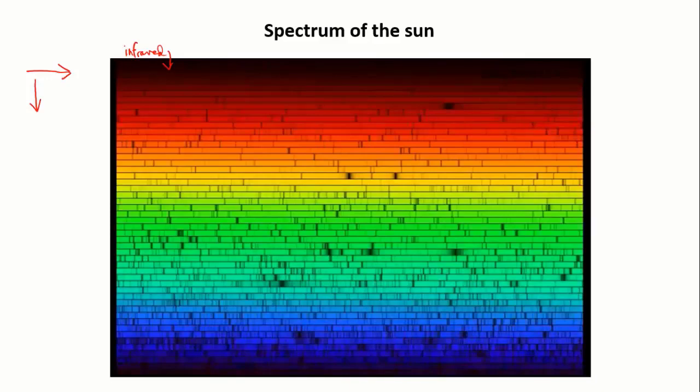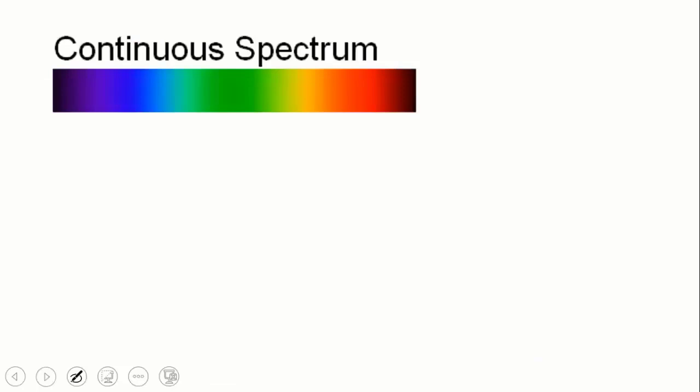But as scientists began to examine gases of pure elements they found something that gave them a clue. First they took white light from a lamp and split it into its spectrum. And this is what it looks like, the familiar rainbow.